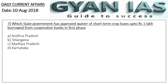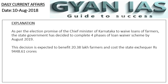Question 7: Which state government has approved a waiver of short-term crop loans up to 1 lakh rupees borrowed from co-operative banks in its first phase? Options: Andhra Pradesh, Telangana, Madhya Pradesh, or Karnataka. The correct answer is Option D — Karnataka. This was an election promise made by Chief Minister HD Kumaraswamy. This decision is expected to benefit around 20 lakh farmers and would cost the state around 9,500 crore rupees.